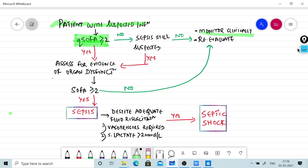If the Q SOFA is more than or equal to 2, or the patient is suspected of sepsis, we will assess for evidence of organ dysfunction by calculating a detailed SOFA score. If the SOFA score is more than or equal to 2, then it is a diagnosis of sepsis. If less than 2, we will monitor and re-evaluate when new lab parameters are available.